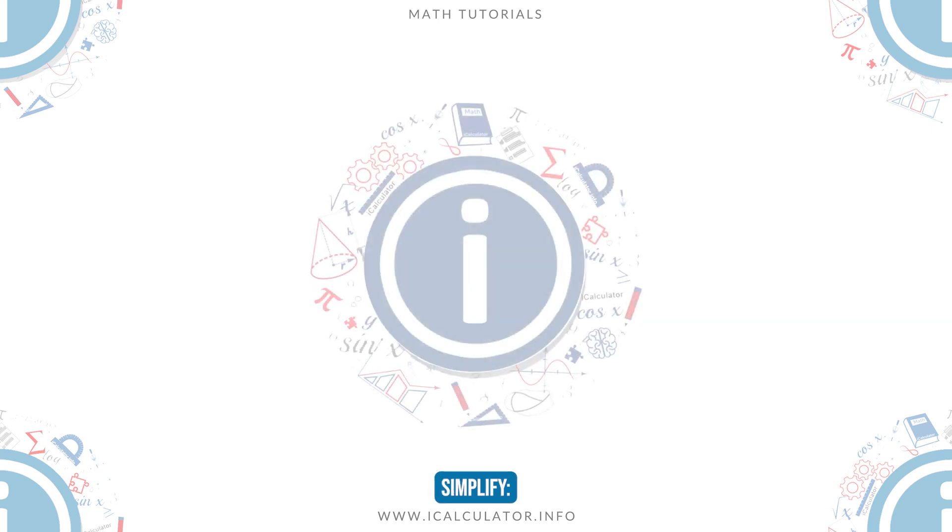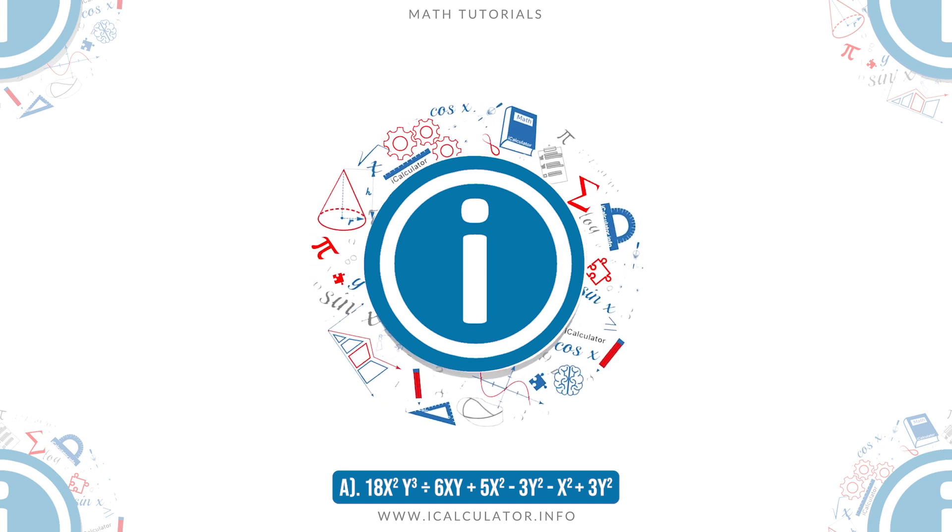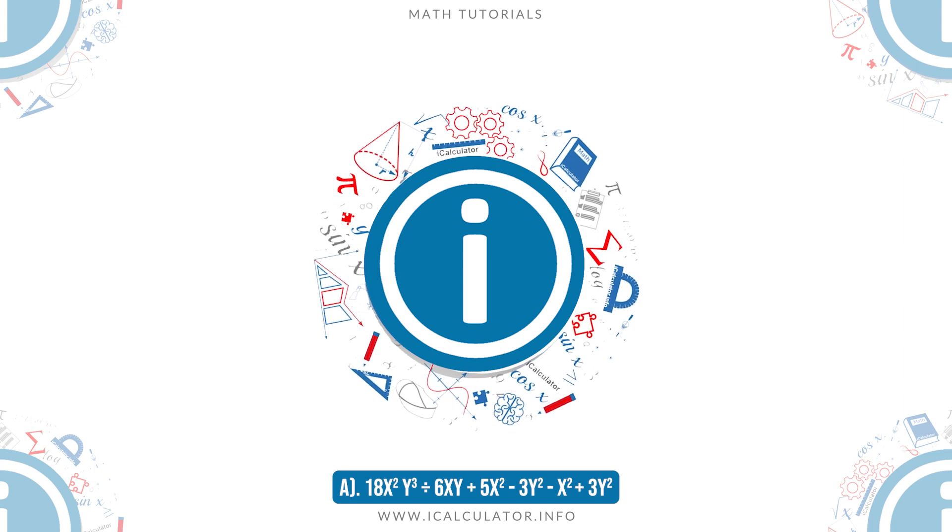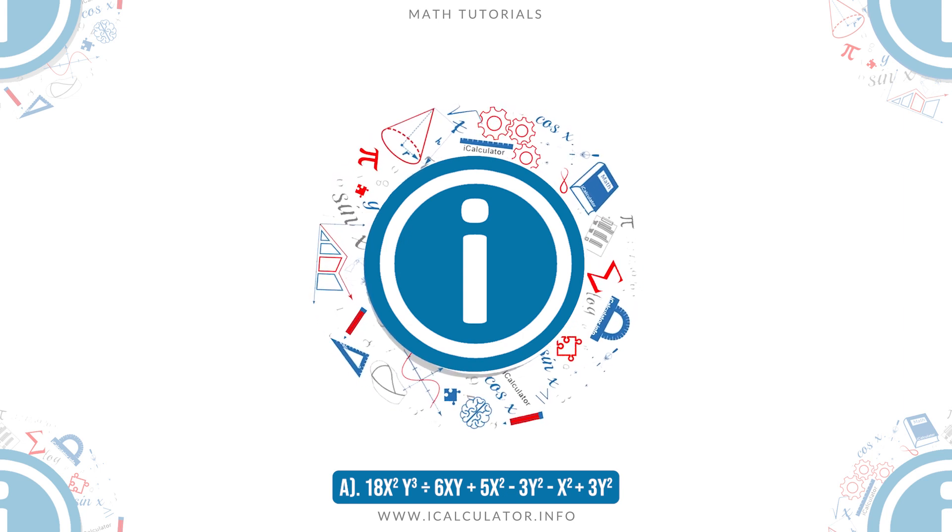Simplify A: 18x²y³ divided by 6y plus 5x² minus 3y² minus x² plus 3y².